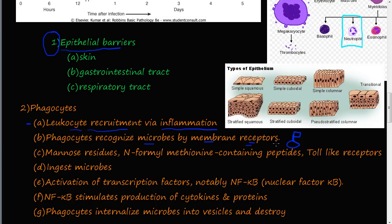The phagocyte recognizes the flags on the microbe, identifies it as non-self, and essentially engulfs it — creating a large opening and sucking the bacteria inside the cell. So if I have a phagocyte cell and a bacteria nearby with flags on it, the phagocyte will recognize it and ingest it.